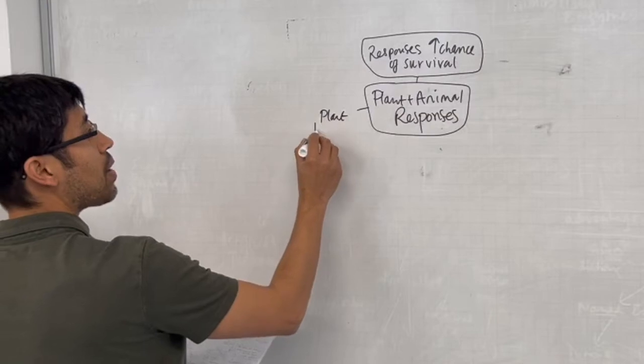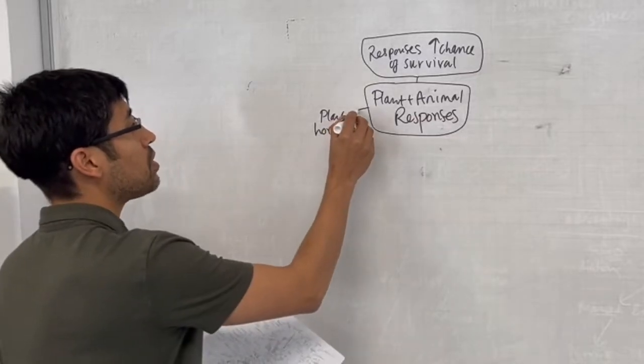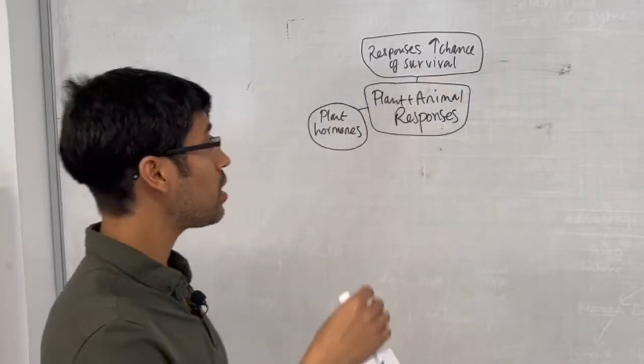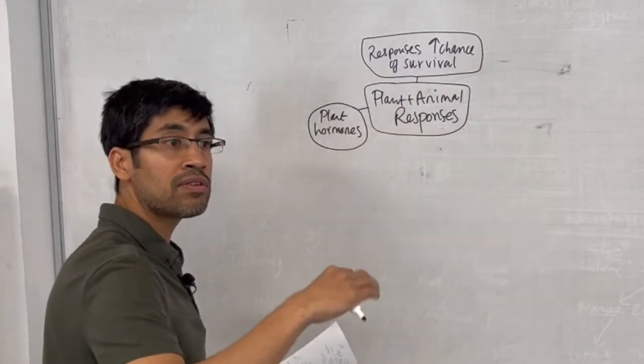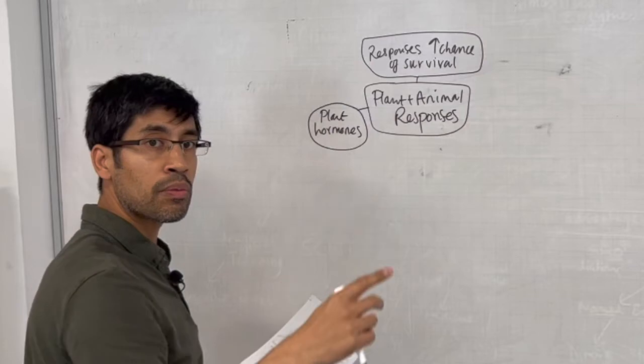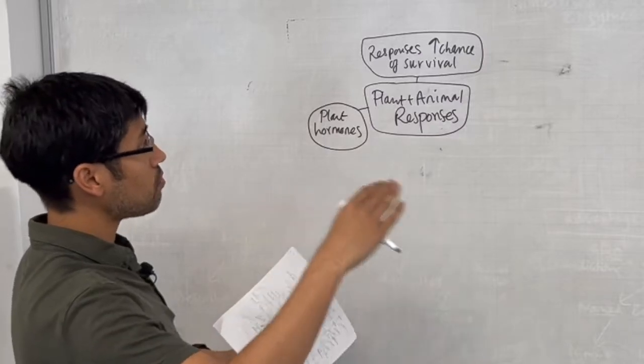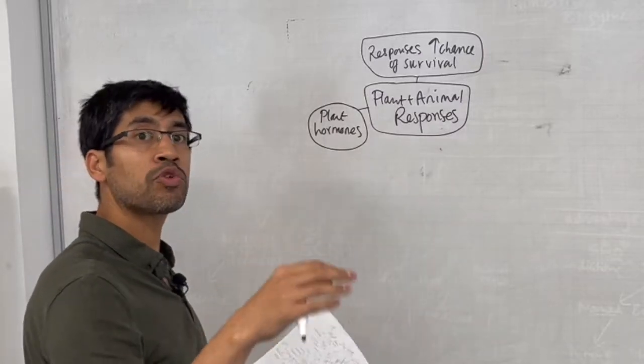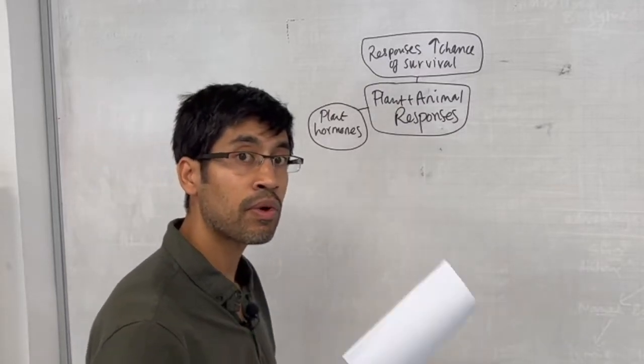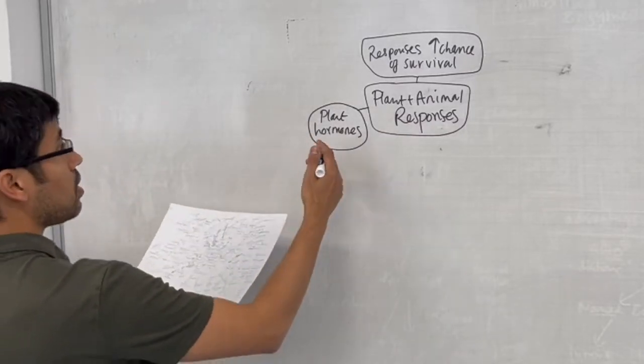Plant responses happen through plant hormones. Understand how plant hormones work. The hormone is released in one part of the plant as a result of some stimulus, and that hormone travels through the plant via its various transport routes or from cell to cell. Eventually it binds to a receptor on the target cell, and binding to the receptor causes intracellular signaling and the response.